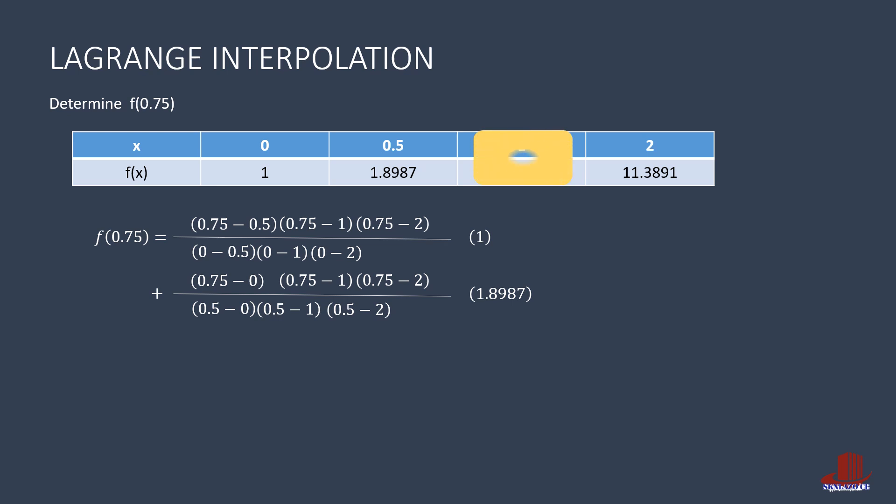Cover the third data point and get the term's numerator as 0.75 minus 0 times 0.75 minus 0.5 with 0.75 minus 2. The denominator has 1 minus 0 times 1 minus 0.5 and 1 minus 2. The y difference included in this term is 3.7183.